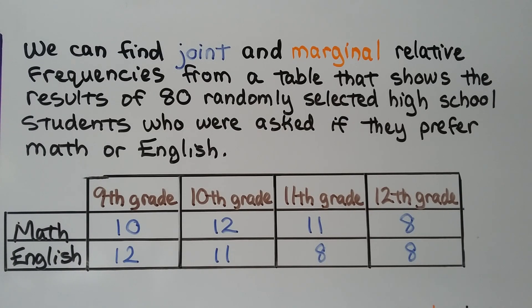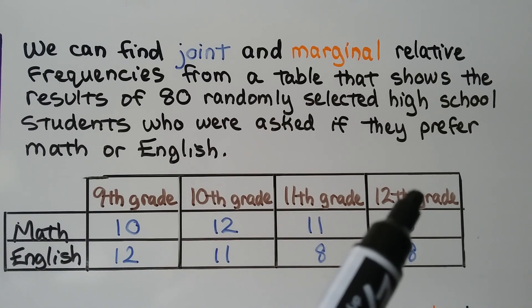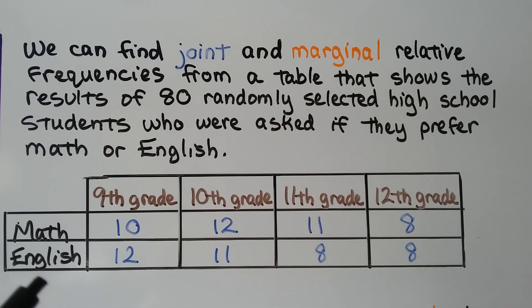We can find joint and marginal relative frequencies from a table that shows the results of 80 randomly selected high school students who were asked if they prefer math or English. So we have ninth grade, tenth grade, eleventh grade, and twelfth grade and we have math and English.